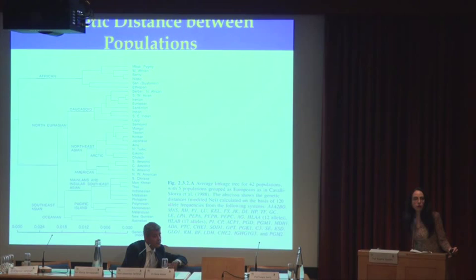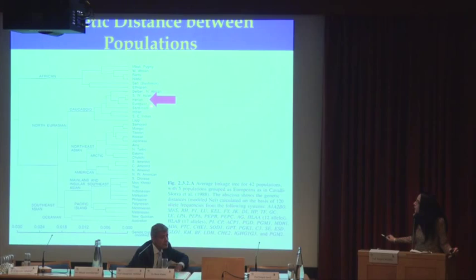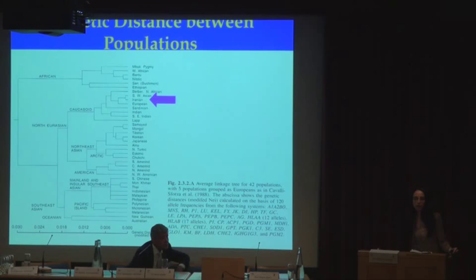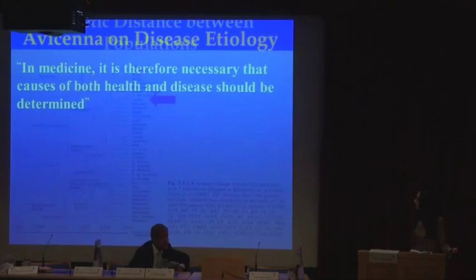If you look at the North Eurasian ancestral population, the Caucasoid branch, you see that Iranians share greater genetic similarity with Southwest Asians and Europeans than they do with some of their immediate geographic neighbors.